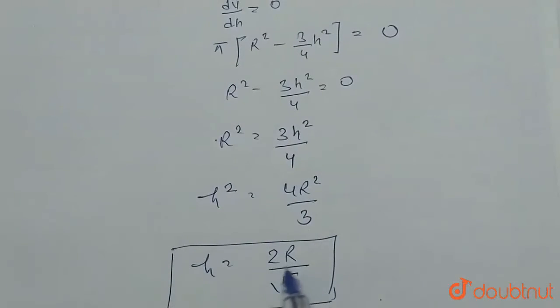Here we can say that height of the cylinder equals 2R by root 3.